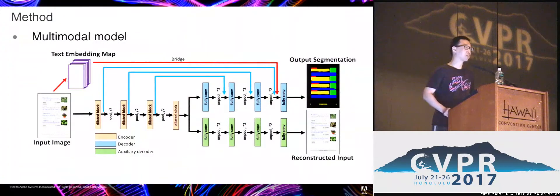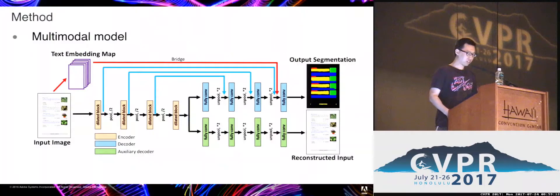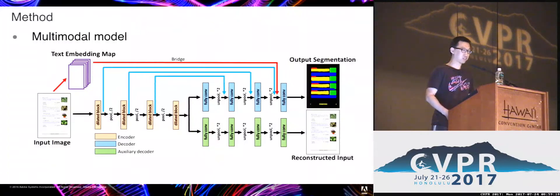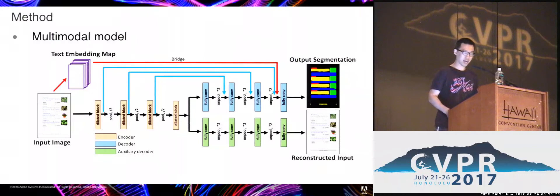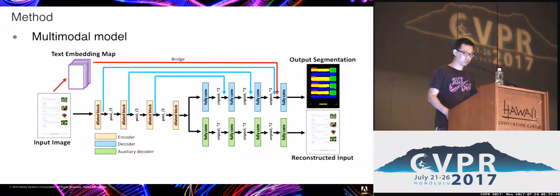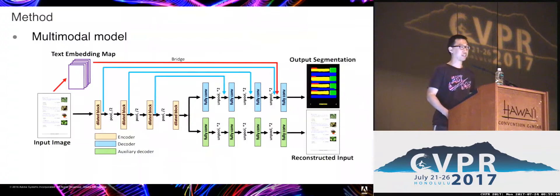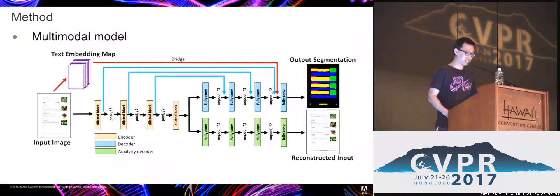Here is the architecture of the proposed model. The backbone is an encoder-decoder style neural network for semantic segmentation. To incorporate textual information, we built a text-embedding map and concatenated it with the learned visual features. Since we don't have enough labeled training data, we also introduced two semi-supervised training losses: one is the reconstruction loss, shown in the auxiliary decoder branch, and the other is the consistency loss, where pixels belonging to the same region are encouraged to have the same label.